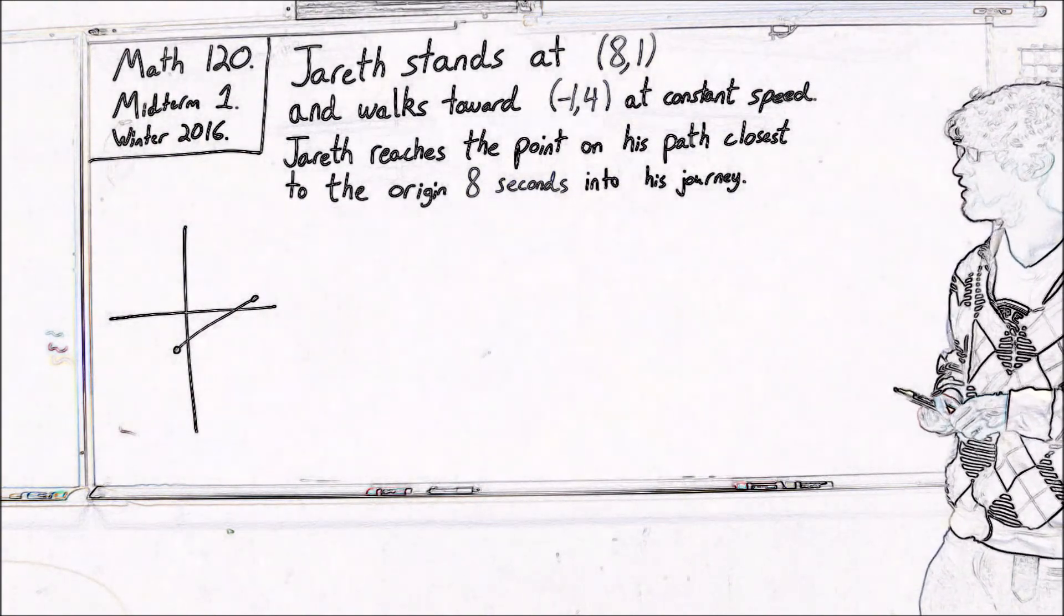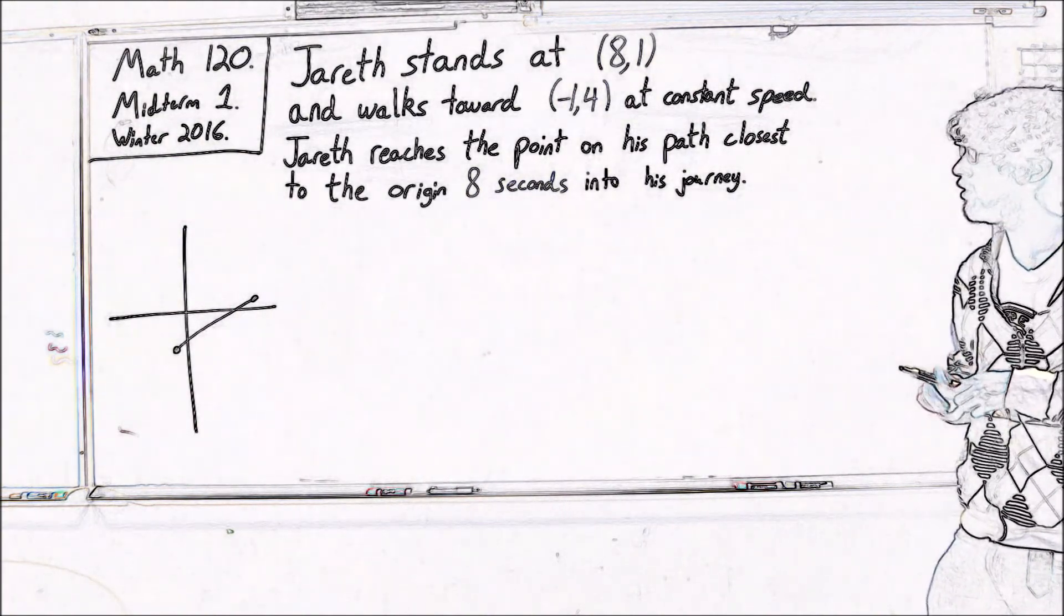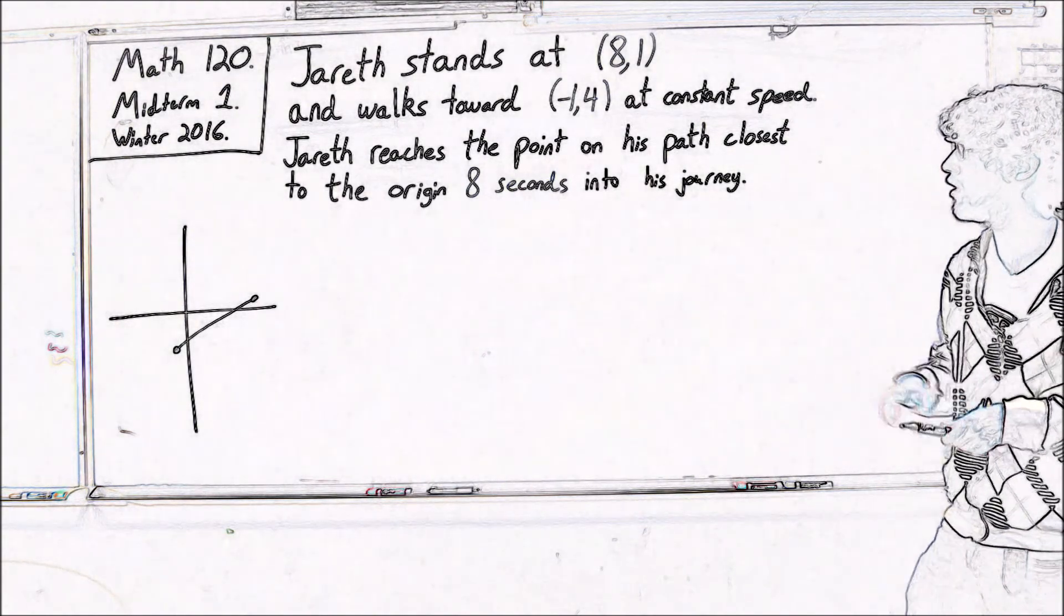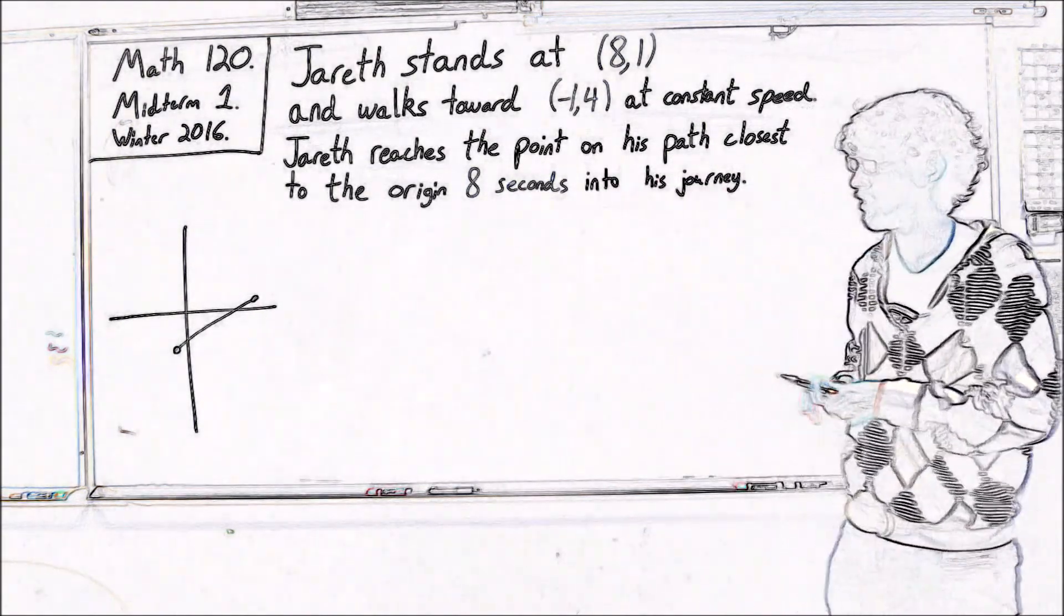So a lot of people get mixed up a little bit on how to make sense of this detail of the point on his path closest to the origin.